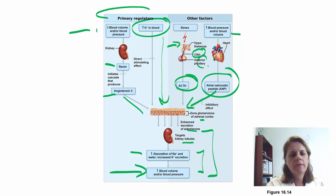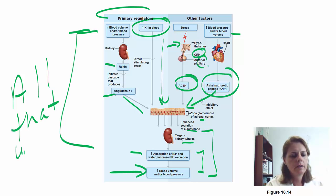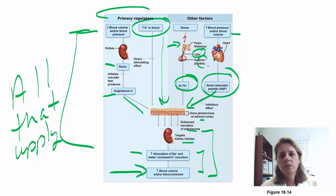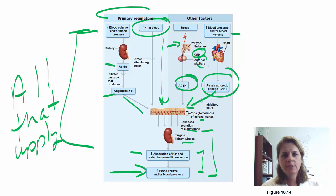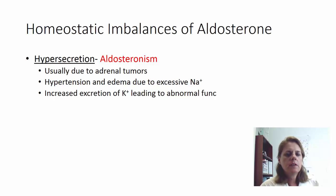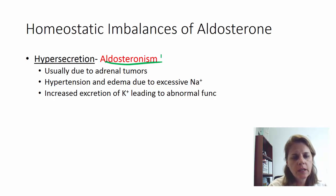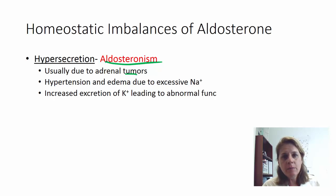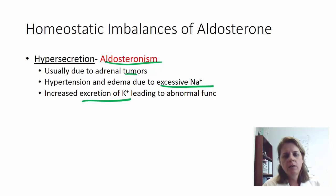This integrates more than just the endocrine system — it brings in the renal system, blood pressure control, and electrolytes. Hypersecretion of aldosterone is called aldosteronism, usually caused by a tumor. You'll see hypertension and edema because you're holding on to too much sodium and water. It also causes you to lose too much potassium, which can impair resting membrane potential and lead to abnormal cellular function.